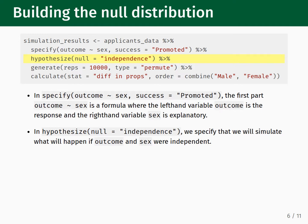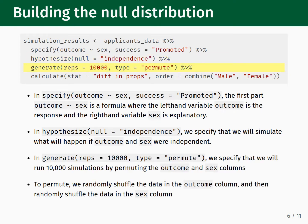Next, we pipe into the generate function. The first input, reps equals 10,000, means that we will run 10,000 simulations to generate our null distribution. The second input, type equals permute, means that each simulation will consist of randomly shuffling the order of the cells in the outcome column and the sex column. Each column is shuffled separately, which in principle breaks any meaningful connection between the two.